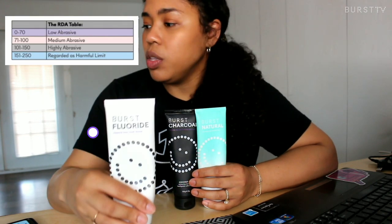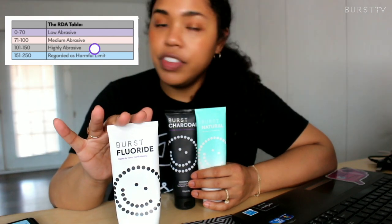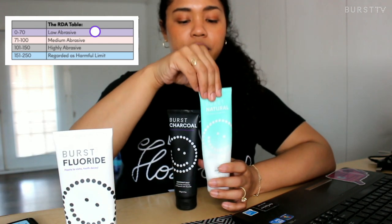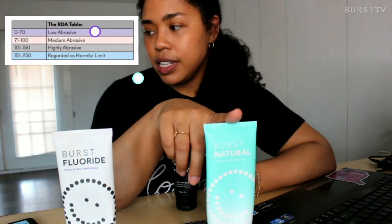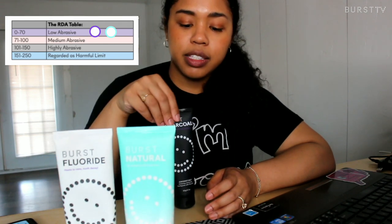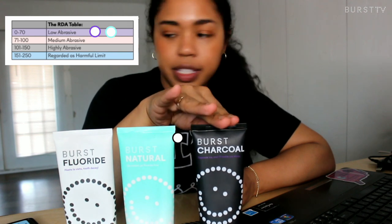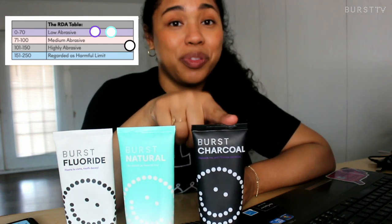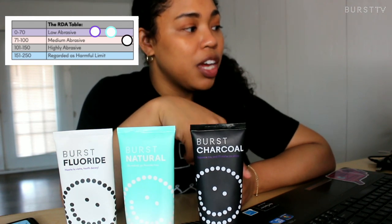We're going to talk about our Burst toothpastes — I have all three here. The wild mint sits at 58, which is in the 0 to 70 low abrasive category. Next, the natural wild mint sits at 66, also in the 0 to 70 category — this is the one I usually recommend to patients with sensitivity. And last but not least, the coconut salt toothpaste sits right above 70 at 73, placing it in the 70 to 100 medium abrasive category.